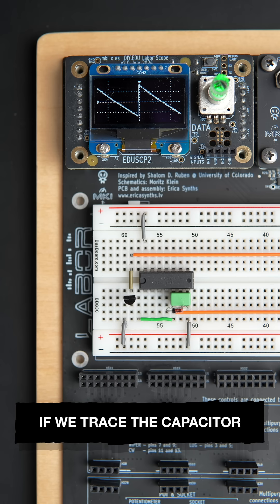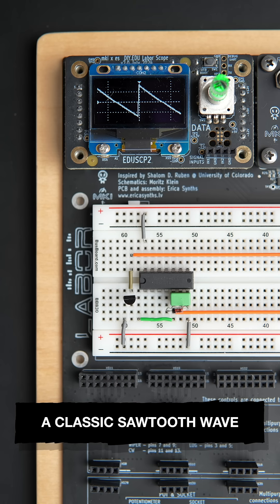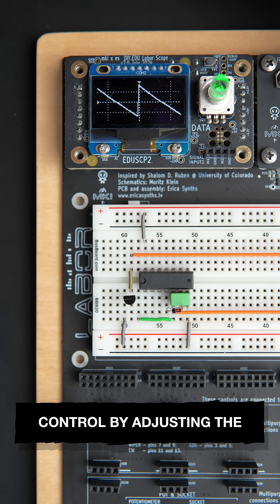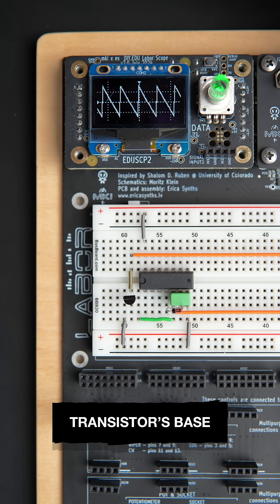If we trace the capacitor voltage over time, we get a classic sawtooth wave, whose frequency we can control by adjusting the voltage at the transistor's base.